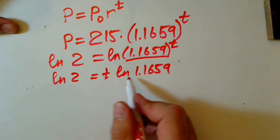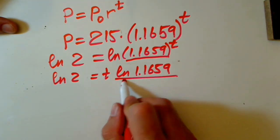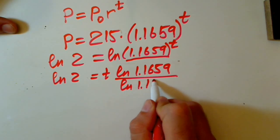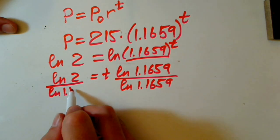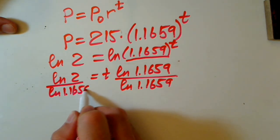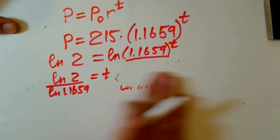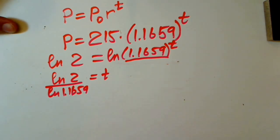To find T, we divide by natural log 1.1659, and our T equals to this number, which is approximately actually equals to 4.5 minutes.